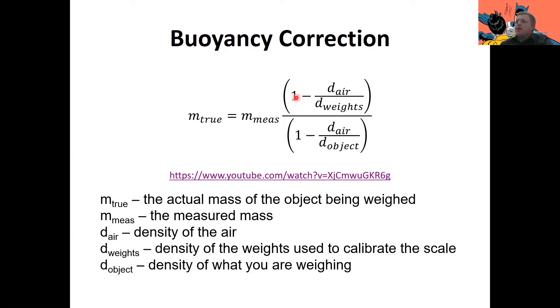So on top of this ratio, we have one minus the density of air, which I'll provide for you in the labs, divided by the density of weights. So in the analytical balances we use in this class, the density of our weights is always 8.0 grams per mil. And this is that internal calibration weight inside of our balance. And then on the bottom of this, we have one minus the density of air again, divided by the density of our objects. So this is the density of our sample. So if we're trying to measure the mass of water, this would be the density of water. We're trying to measure the mass of a block of lead. This would be the density of lead.